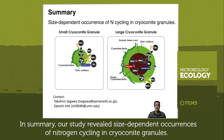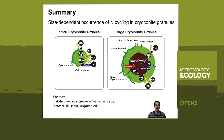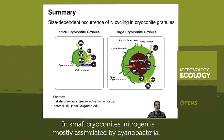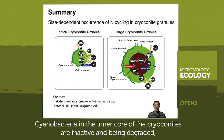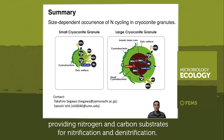In summary, our study revealed size-dependent occurrences of nitrogen cycling in cryoconite granules. In small cryoconites, nitrogen is mostly assimilated by cyanobacteria. In large cryoconites, cyanobacteria in the surface layer fix carbon and assimilate nitrogen, while cyanobacteria in the inner core are inactive and being degraded, providing nitrogen and carbon substrates for nitrification and denitrification.